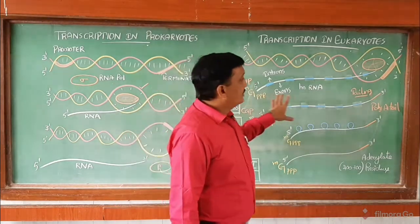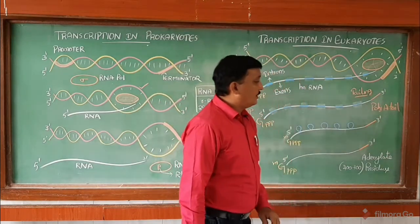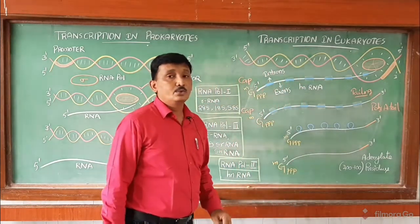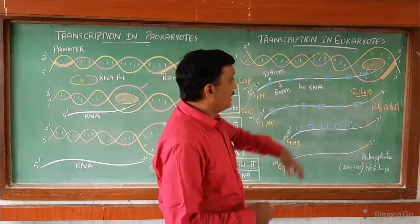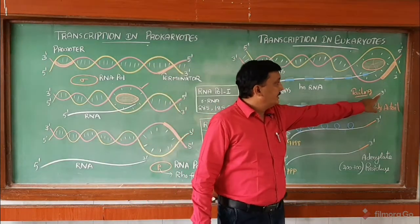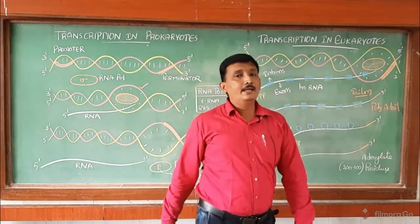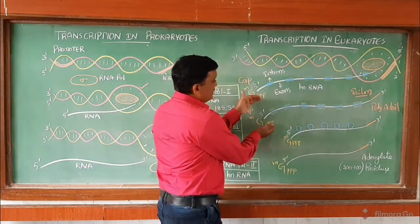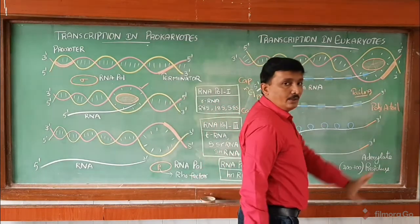Towards the 3' end, there will be adding of adenylate residues. Nearly 200 to 300 adenylate residues are added at the 3' end. That process is known as tailing. So, at the 5' end capping, and at the 3' end tailing.